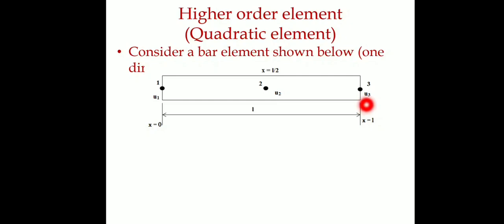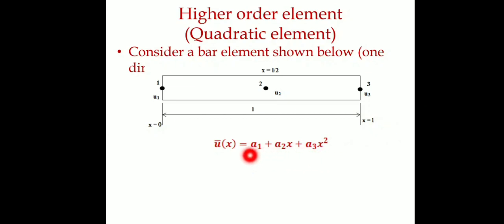With three points we have a higher-order quadratic element, which is more accurate. The displacement equation becomes u = a1 + a2·x + a3·x², using generalized coordinates a1, a2, a3.